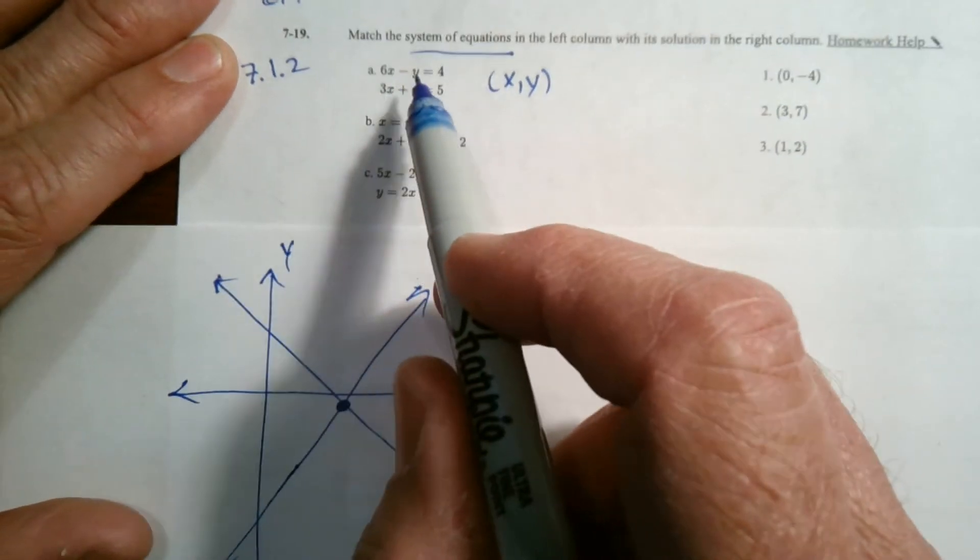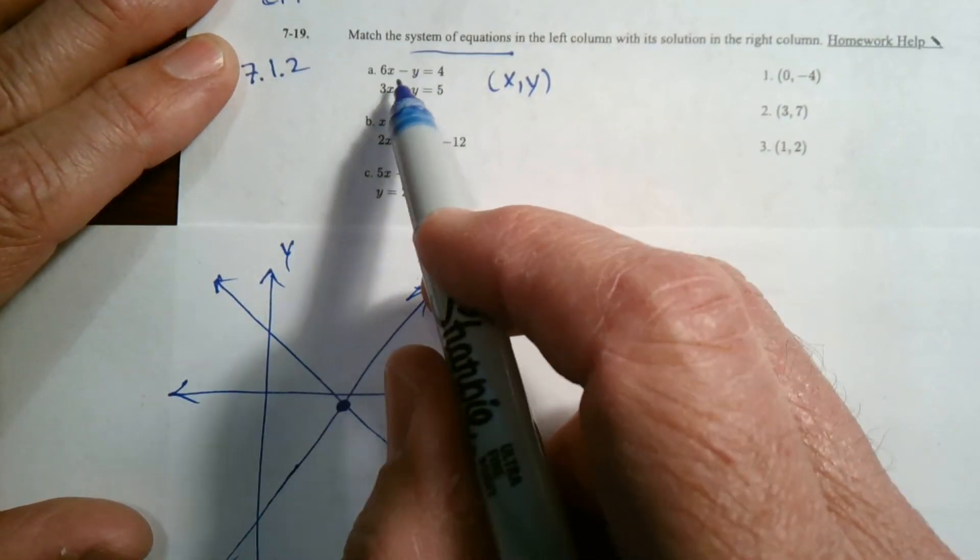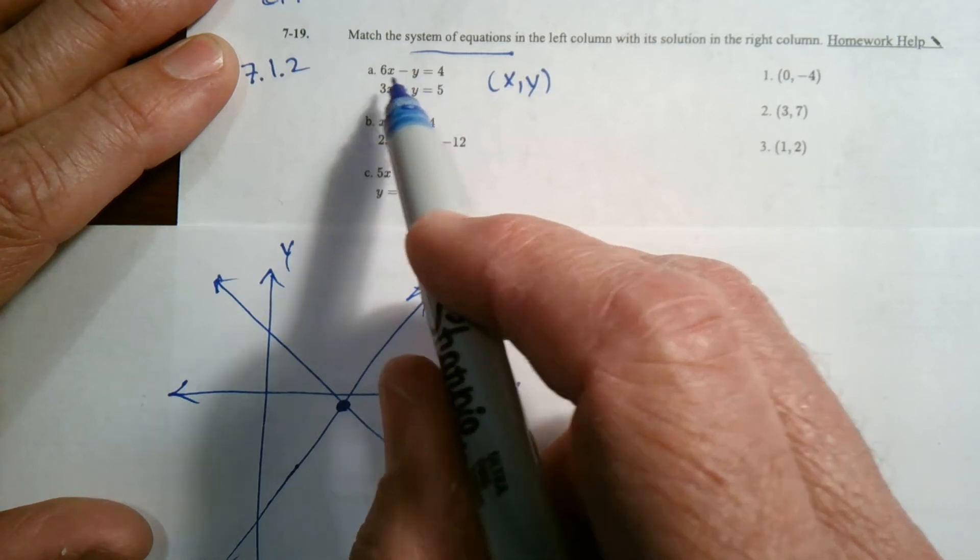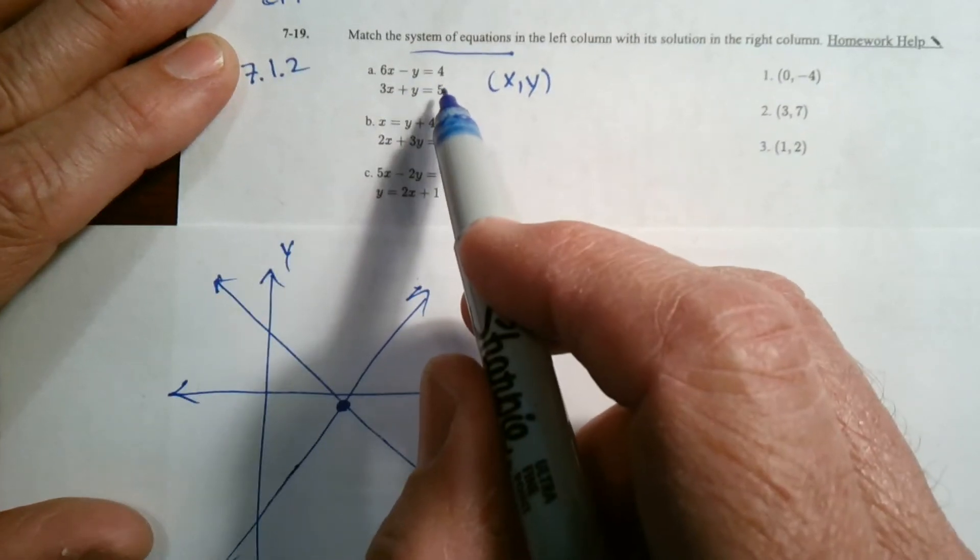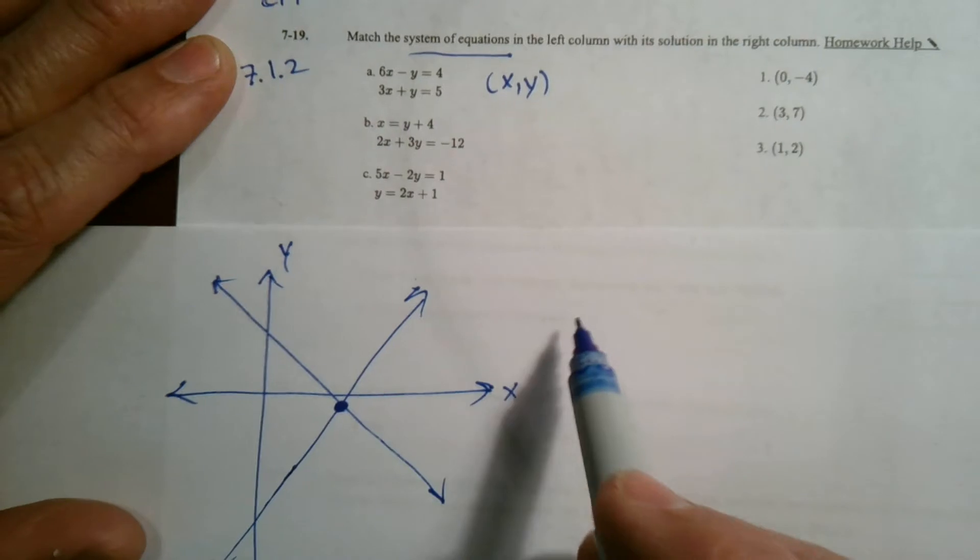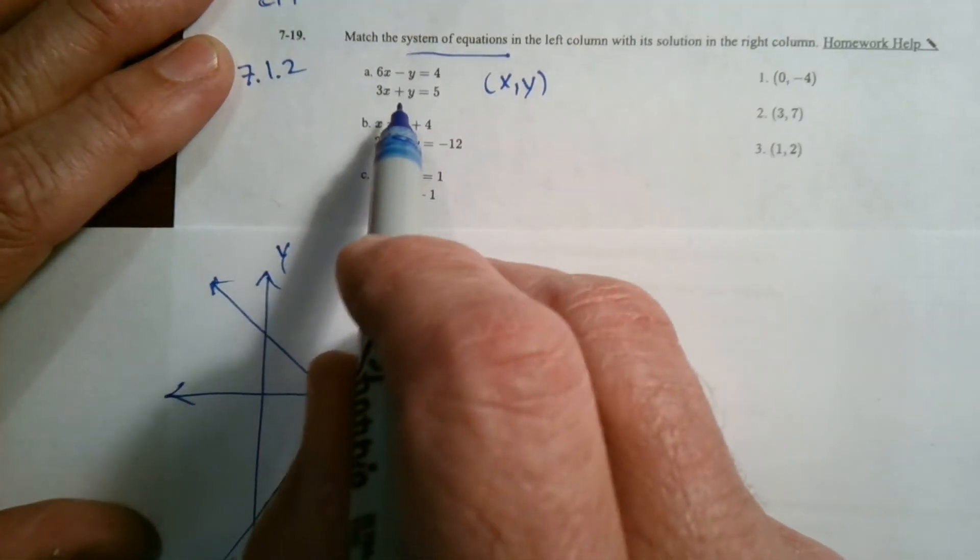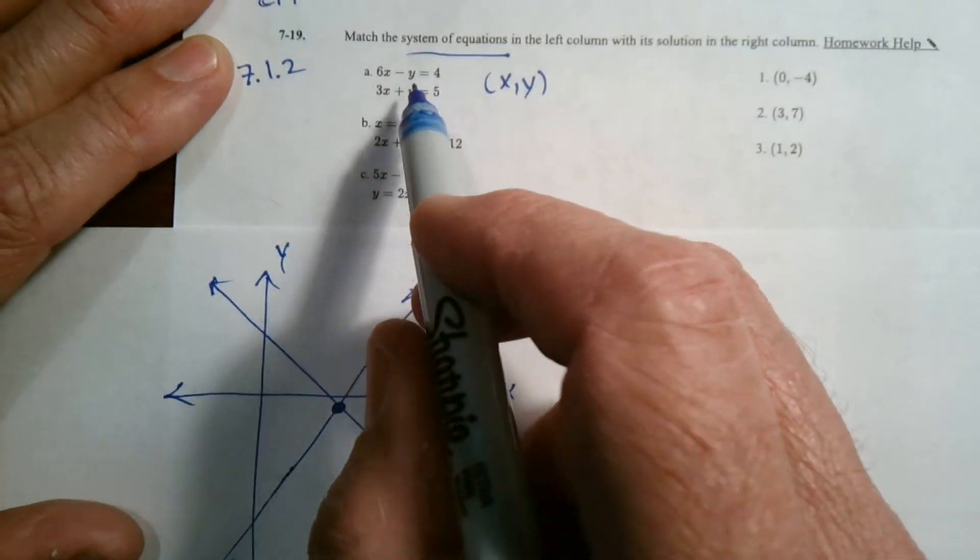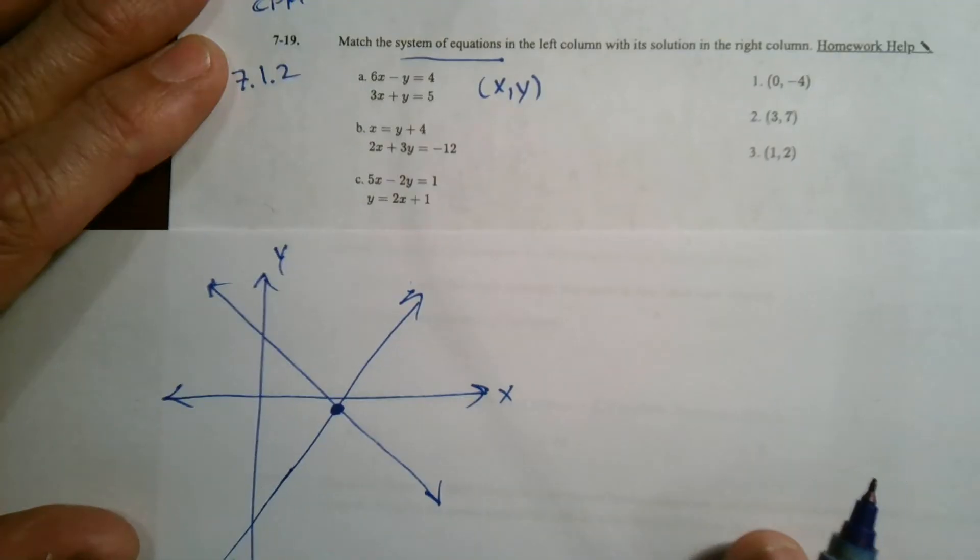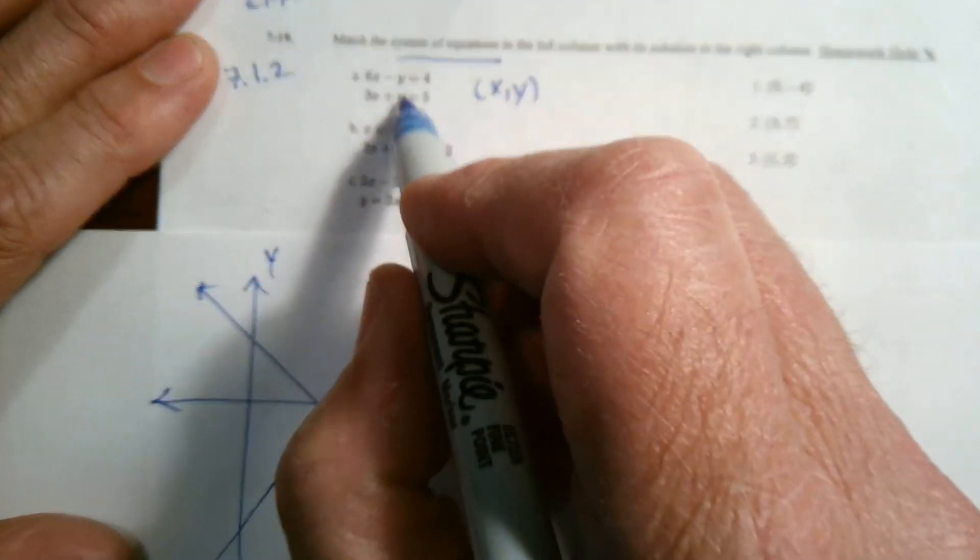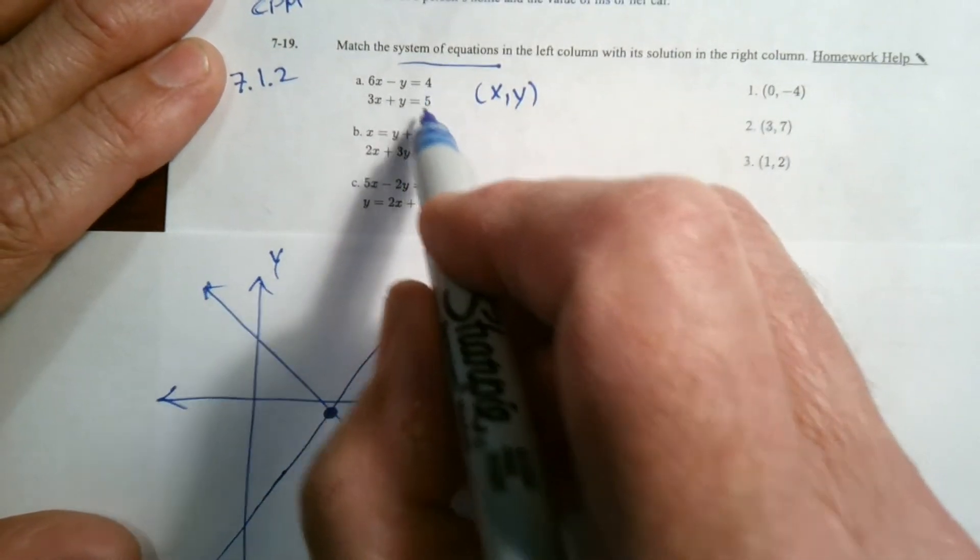Algebraically, it's where the answers are the same. Where my x and y work for this equation and this equation at the same time. So I could graph them and find the answer that way if I wanted to. Or I could also use the substitution method, the equal values method where I solve for y and set them equal to each other and solve that way.